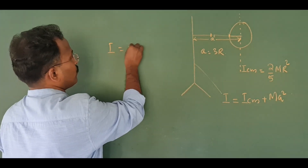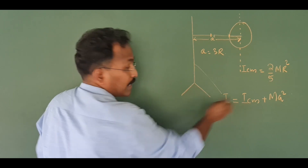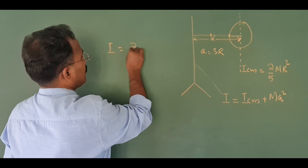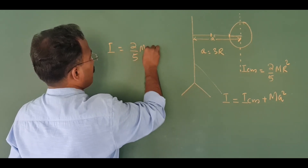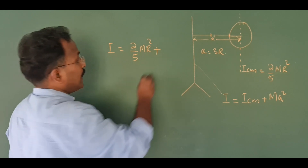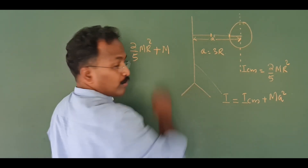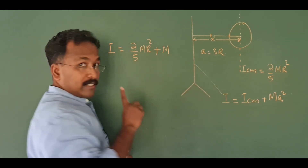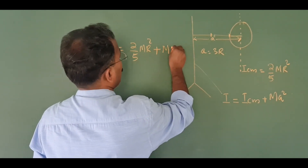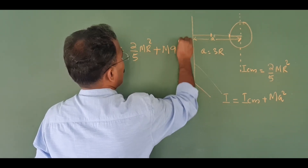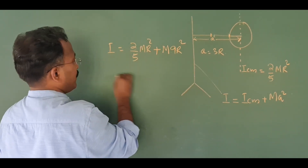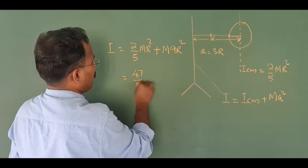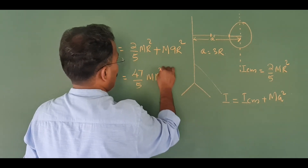I is equal to ICM plus Ma squared. ICM is 2 by 5 mR squared, plus M into a squared. The distance a here is 3R. Substituting that, you will get the result as 47 by 5 mR squared.